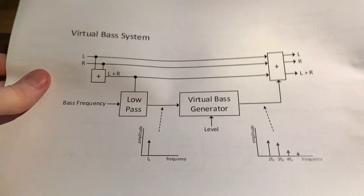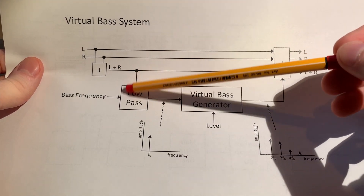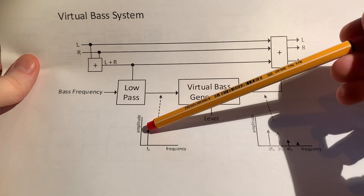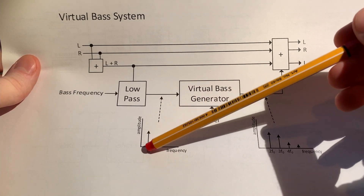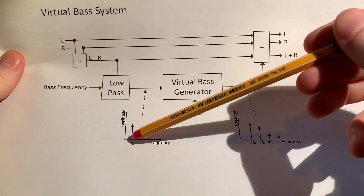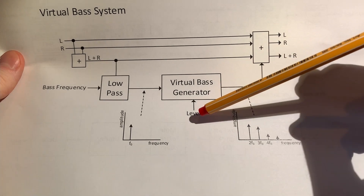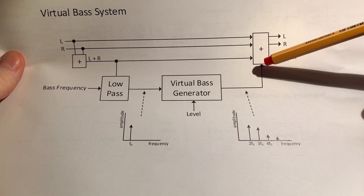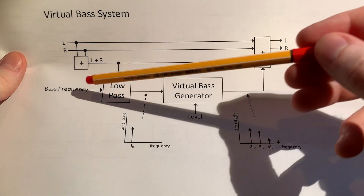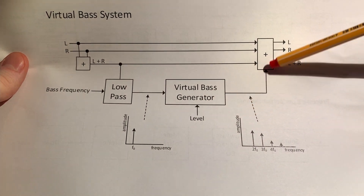The virtual bass system, as I explained in my first sigma DSP video, starts with a low-pass filter on the summed left and right channel signal to extract the bass frequency content. It then generates harmonics — second, third, fourth — based on that bass signal, and mixes them with a dedicated level control into the left channel, right channel, and summing channel. There are two configurable parameters: the pass frequency — what is considered a bass signal — and the level of how much harmonic content is mixed in.